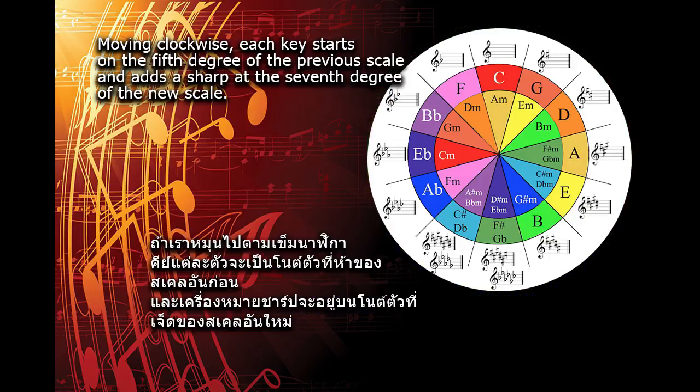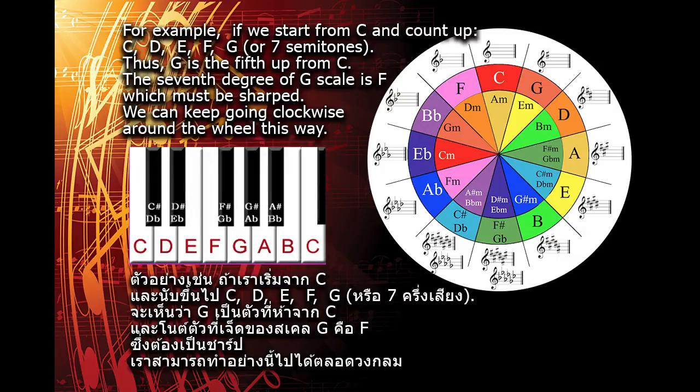Moving clockwise, each key starts on the fifth degree of the previous scale and adds a sharp at the seventh degree of the new scale. For example, if we start from C and count up: C, D, E, F, G. Thus, G is the fifth up from C. The seventh degree of the G scale is F, which must be sharp.